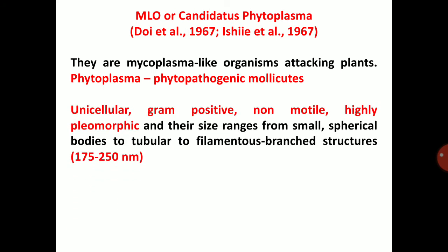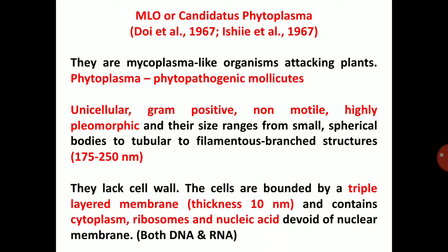Candidatus Phytoplasma is unicellular, gram-positive, non-motile, and highly pleomorphic — meaning it has various shapes. Size ranges from small spherical bodies to tubular to filamentous branched structures, 175 to 250 nanometers in size. They lack a cell wall. These cells are bounded by a triple-layered membrane, 10 nanometers thick, and contain cytoplasm, ribosomes, and nucleic acids. There is no nuclear membrane. Candidatus Phytoplasma contains both DNA and RNA.